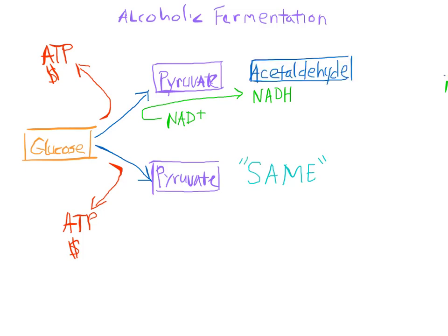Next, the pyruvate loses a molecule of CO2 — this is a gas — and turns into an intermediate called acetyl aldehyde.